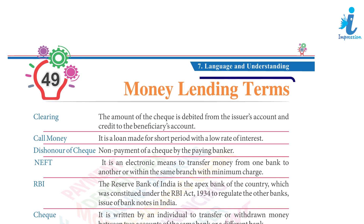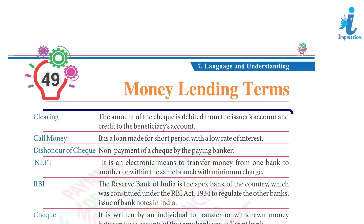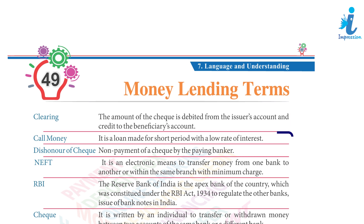Chapter 49: Money Lending Terms. Clearing — the amount of the cheque is debited from the issuer's account and credited to the beneficiary's account.